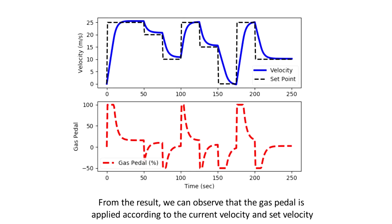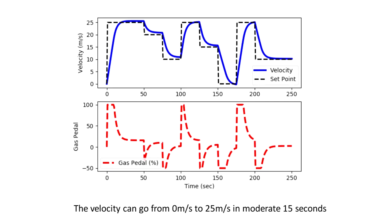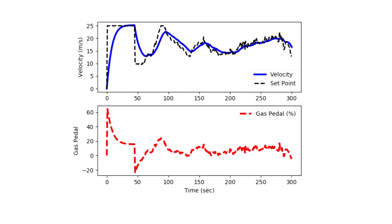From the results, we can observe that the gas pedal is applied according to the current velocity and set velocity. The velocity can go from 0 meters per second to 25 meters per second in approximately 15 seconds. The overshoot percentage is also less than 1%.